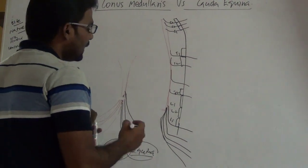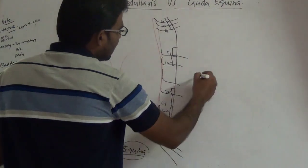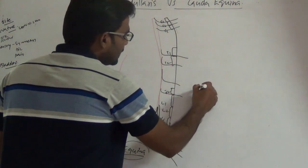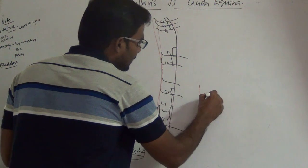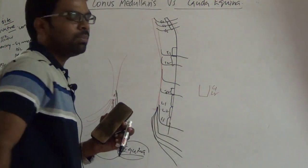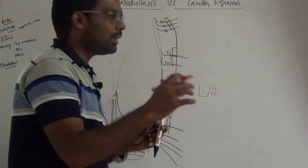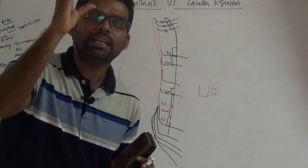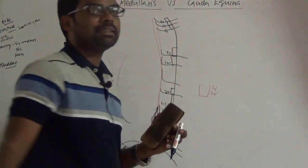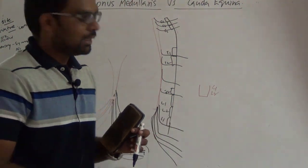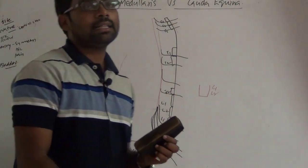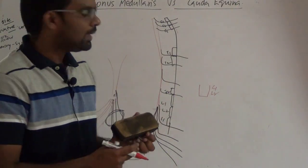What is conus medullaris then? Conus medullaris refers to a lesion at the ending of the spinal cord, at or just below the L1 or L2 vertebra — at the very tip of the spinal cord. If the lesion is instead present in the lumbosacral nerve roots themselves, that is called a cauda equina lesion.